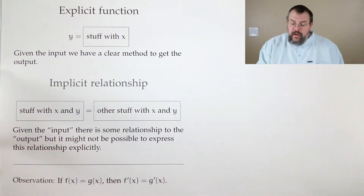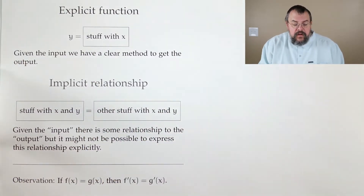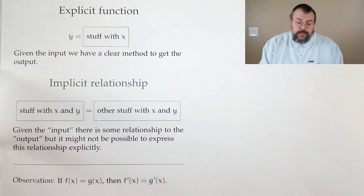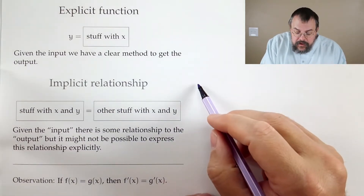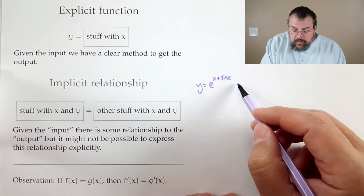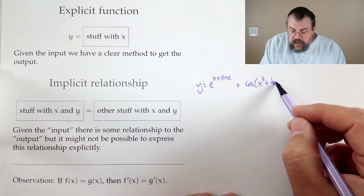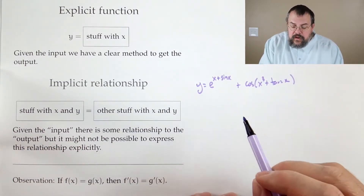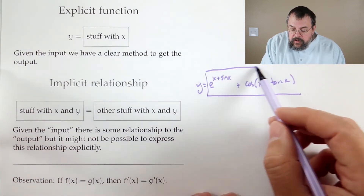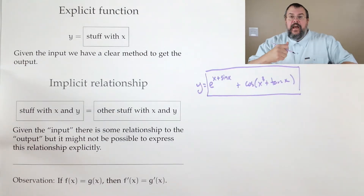The way we should think about explicit functions — because they're the ones we're more familiar with — is that we have y equals stuff with x, and there's a mechanical rule. You can have really exotic functions or really simple ones. For example, e to the x plus sine of x plus cosine of x cubed plus tangent x. It's a strange-looking function, but notice it's all x's. You give me a value for x and I can grind through and figure out what y needs to be.